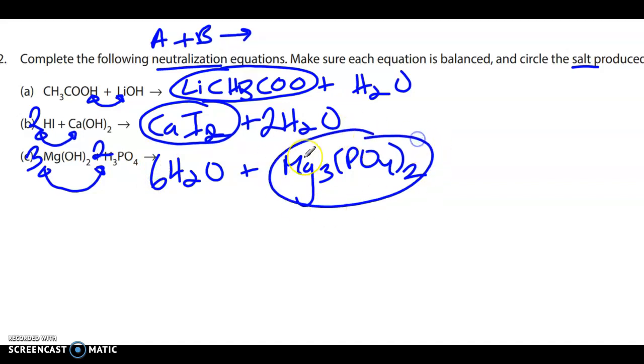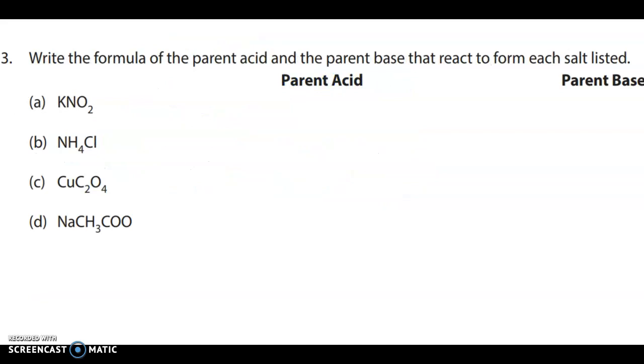And as a result of that, we're going to need 6 waters. And the salt, of course, is magnesium phosphate. Okay. So this is really, this section here is literally just practice writing out double displacement reactions. I know it's specific because it's an acid and a base. But it's no different than writing any other double displacement.